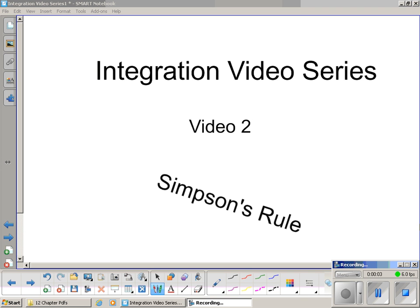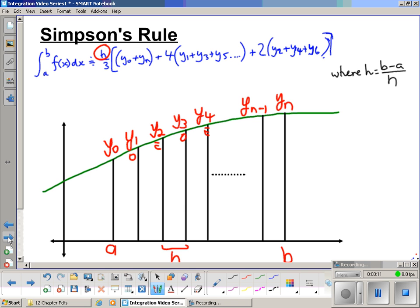Welcome to video 2 of the integration video series for 2 unit mathematics. We're having a look at Simpson's rule in this video. Simpson's rule is another attempt at finding the area under the curve, approximating the area under a curve, and finding the area between the curve, the x-axis, and between two x values a and b.